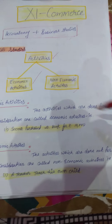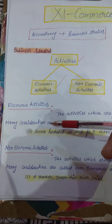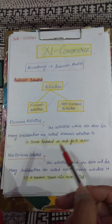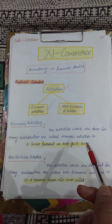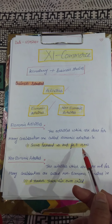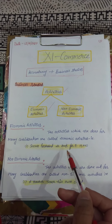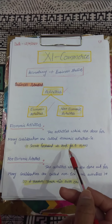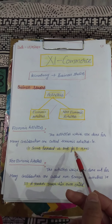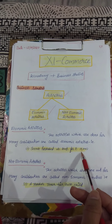First of all, I want to tell you the meaning of activity. Any work that we perform is called an activity — I am performing this activity. Activities are of two types: first is economic activity, and second is non-economic activity. Let's take the description of both these activities — what is an economic activity?